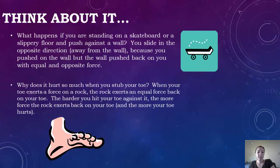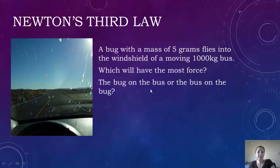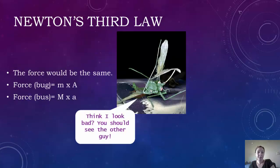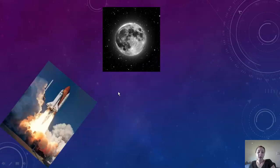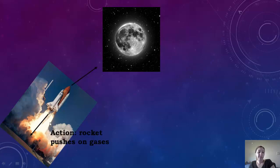For an example, a bug with a mass of 5 grams flies into the windshield of a moving 1,000 kg bus. The force of the bug would be mass times acceleration, and the force of the bus is also going to be mass times acceleration — so they're going to be equal because you have the same formula. Another example is when a rocket is flying to the moon — the action is the rocket pushing on the gasses, and the reaction would be the gasses pushing back on the rocket.